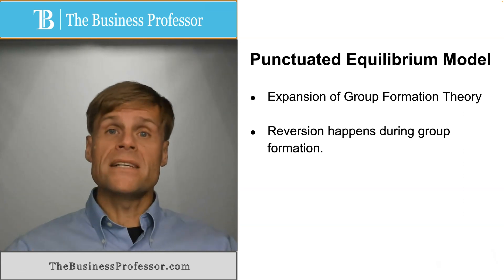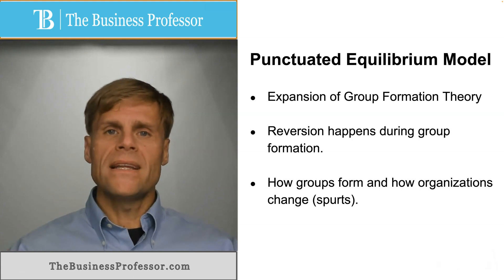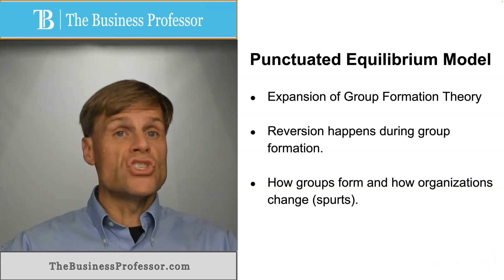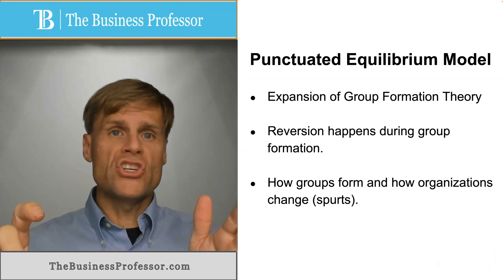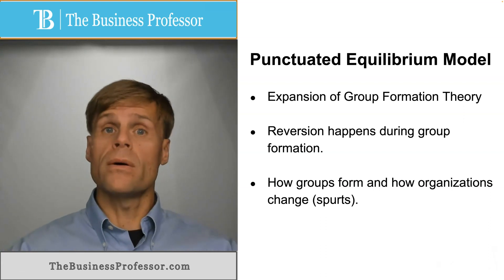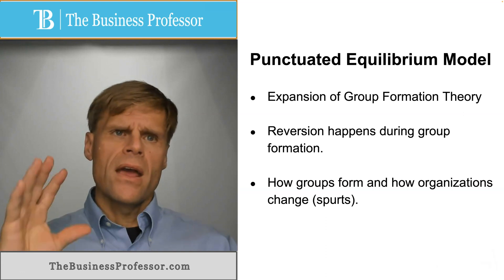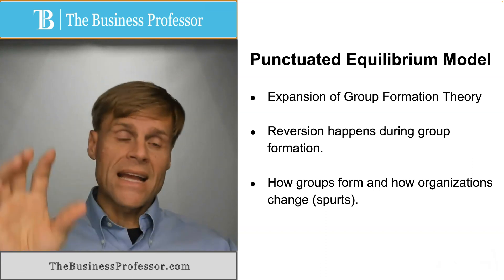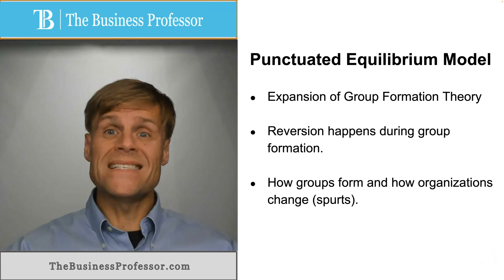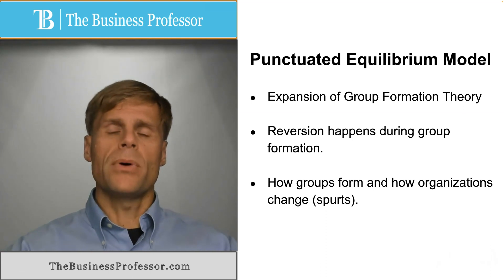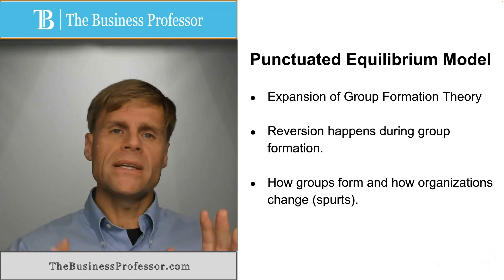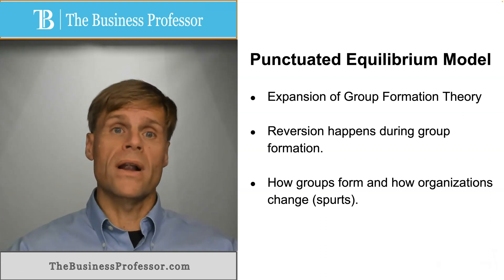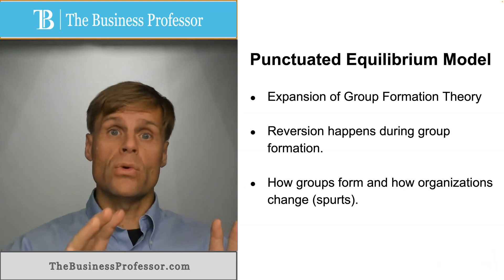This theory identifies and uses existing theory of organizational development — that organizations change in spurts, with very rapid change in short periods of time that disrupt large portions of the organization. It focuses on how this affects the group formation process by cycling back, or making the normal group development model cyclical in nature. So the punctuated equilibrium model simply takes the linear model of group development and makes it cyclical in nature to account for how organizational change disrupts group development.